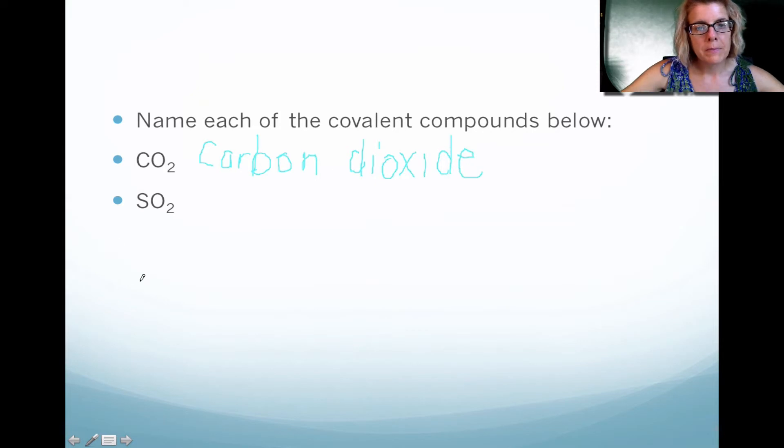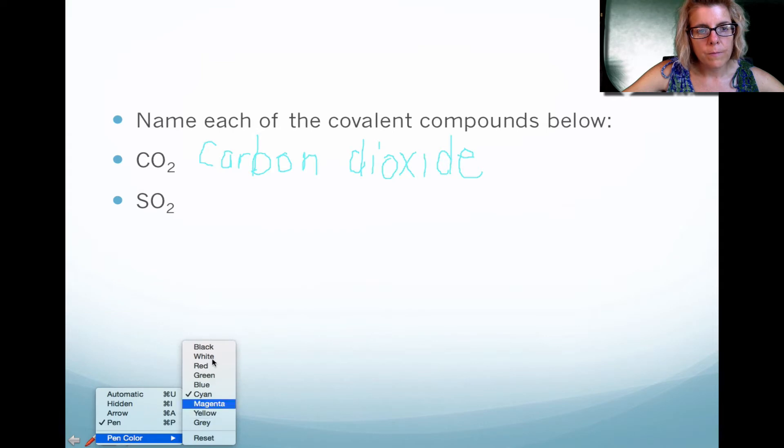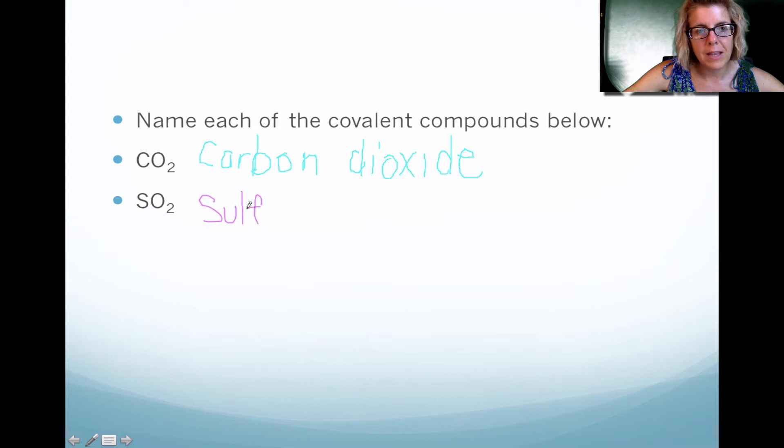Now with the next one, same thing's going on. So instead of carbon, we have sulfur. So notice that we use the element's name. We don't alter it. And then once again, we end up with dioxide. We're going to practice this in class. And we'll have some examples where you have more than just a 2 as a subscript.